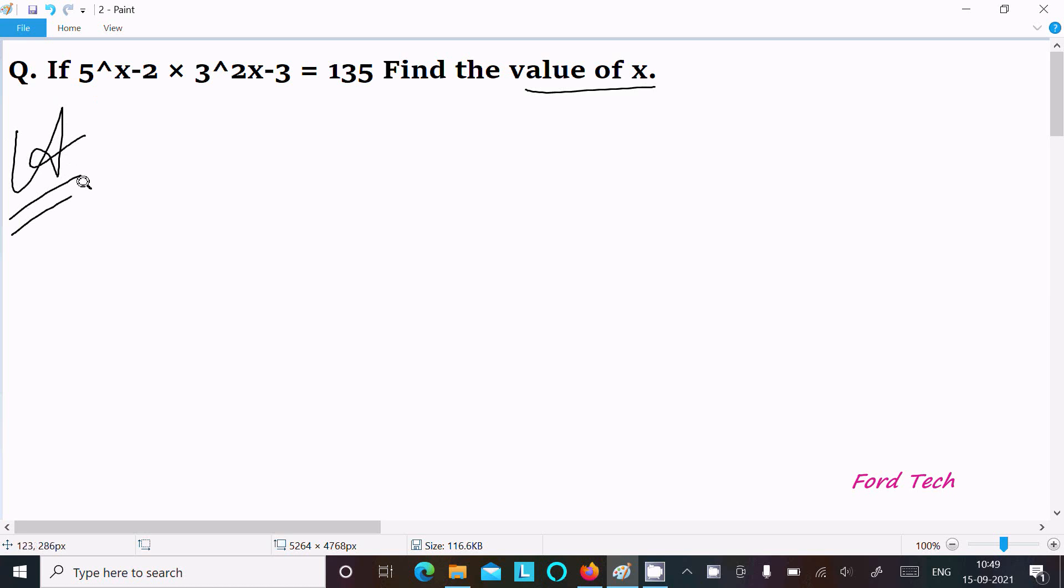Let's see the answer. Writing here the given 5 to the x minus 2 times 3 power 2x minus 3 equal to 135. So 135 we can write as 5 times 27, which is 5 times 3 cubed.